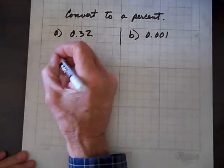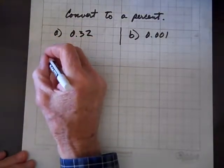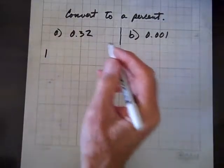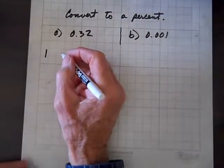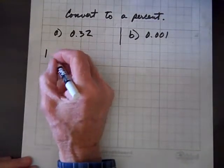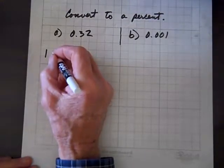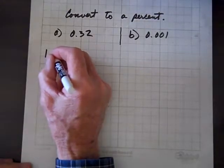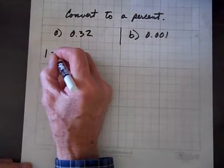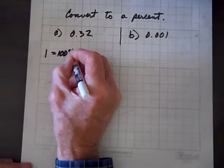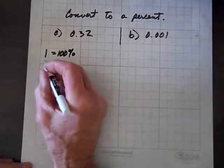First thing I want you to keep in mind that another way to write 1, and by the way, we can multiply anything we want by 1 without changing its value. It might change its looks. So, 1 equals 100%.